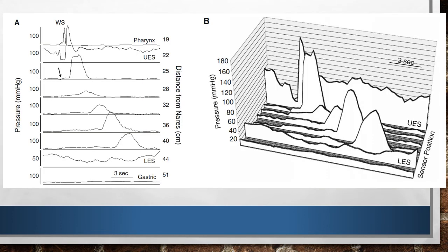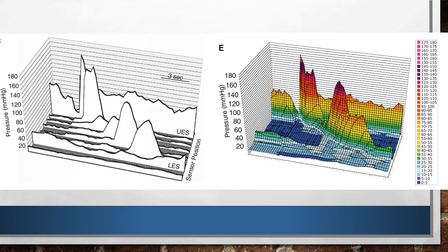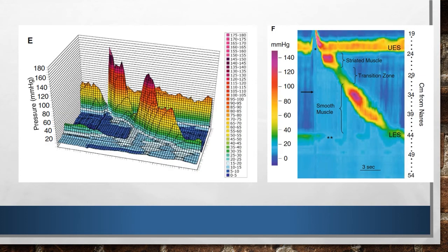I presume you are familiar with standard manometry waves. Now imagine each of those tracings as a 3D graph. Now, if we color-code the pressures, with warm colors for high pressures and cold colors for low pressures, it would look like this. Are you with me up to there? Now, all we do is flatten that 3D picture into a 2D image, and voila!